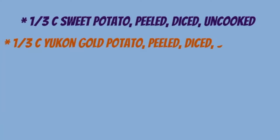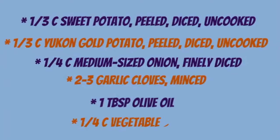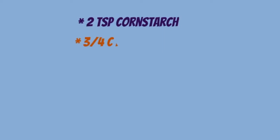One third cup sweet potato, a third cup Yukon gold potato, a quarter cup medium sized onion, two to three garlic cloves, one tablespoon olive oil, a quarter cup vegetable broth, two teaspoons cornstarch, three quarter cup pumpkin puree (you can use the other half of the can),